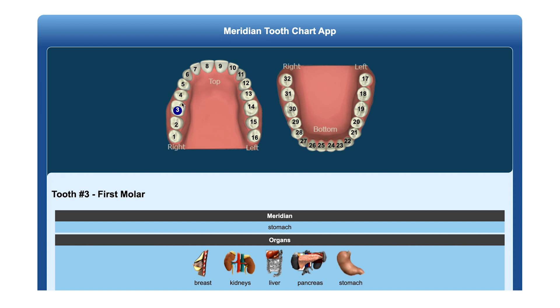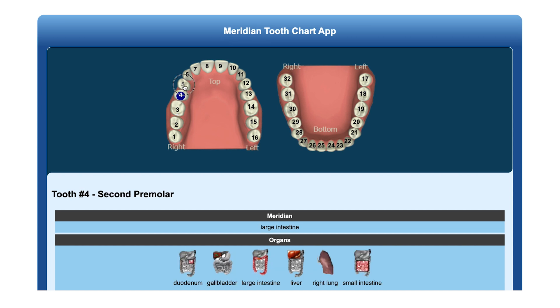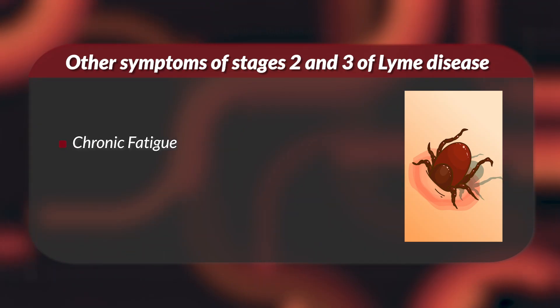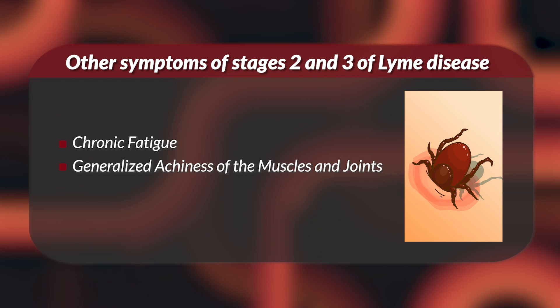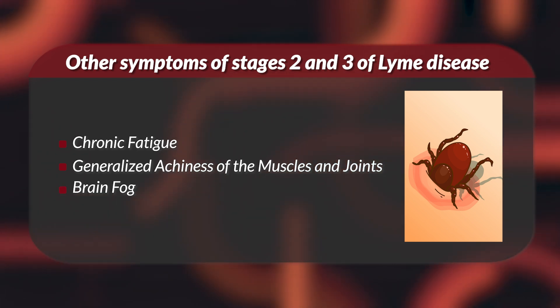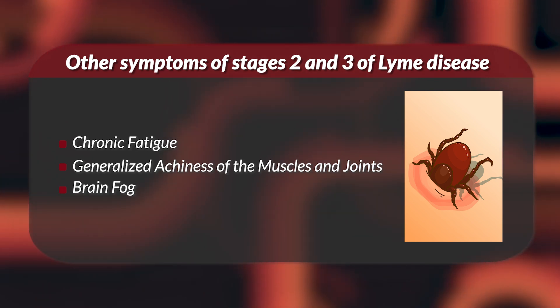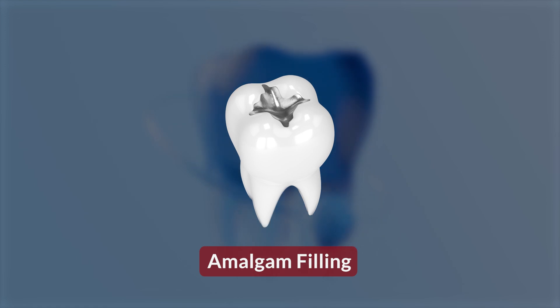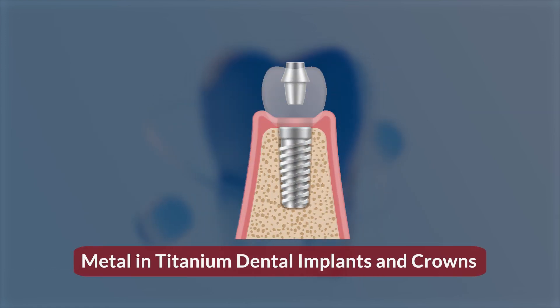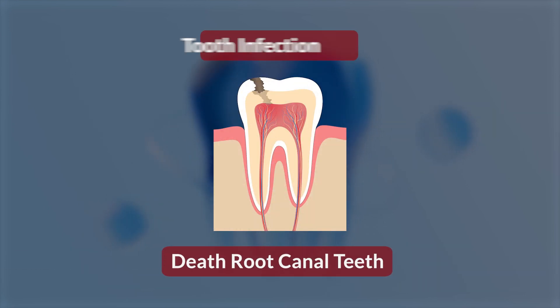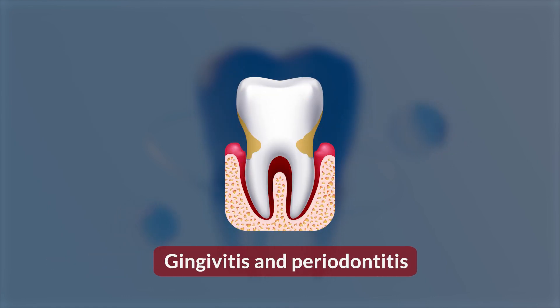Other symptoms of Stage 2 and Stage 3 Lyme disease that are difficult to ascertain include chronic fatigue, generalized achiness of the muscles and joints, and brain fog — a type of cognitive symptom where patients have trouble with short-term memory and multitasking. These symptoms can also be worsened by dental infection and toxicity like toxic mercury in amalgam fillings, metal in titanium dental implants and crowns, jawbone cavitation, dead root canal teeth or tooth infection, and gingivitis and periodontitis.